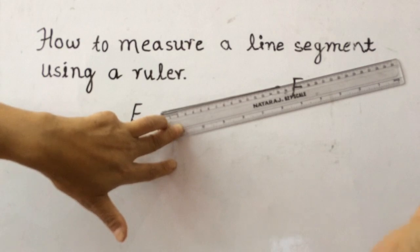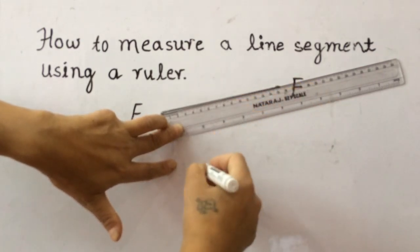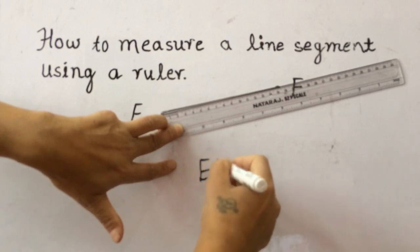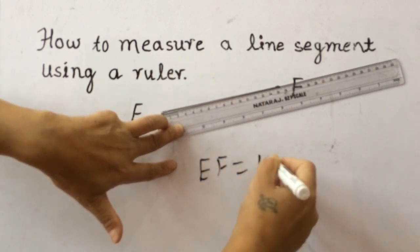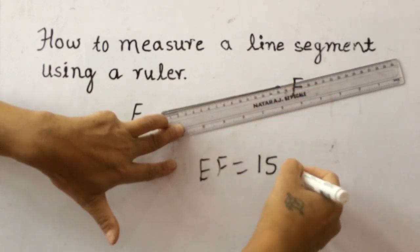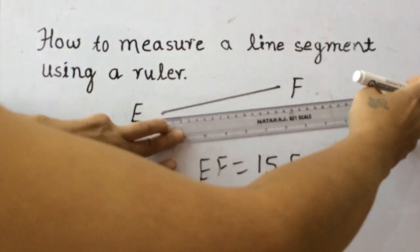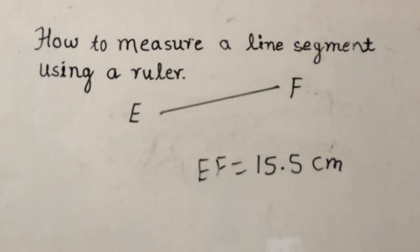So this line segment EF is 15... and we have small lines here. Let's count this line also: 1, 2, 3, 4, 5. So we can write 15.5 centimeters. Thank you for watching this video.